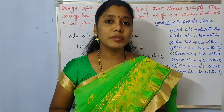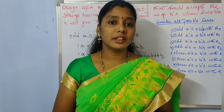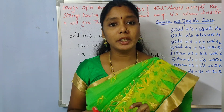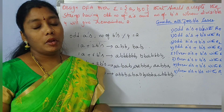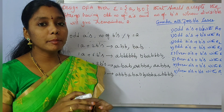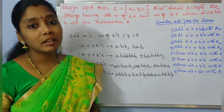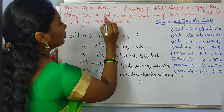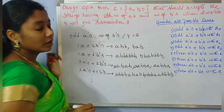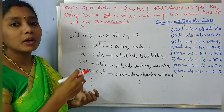Hi all, welcome back. In this video I am going to explain another difficult and interesting problem on DFA. We need to construct a DFA for input alphabet A, B and 0 that should accept strings consisting of an odd number of A's, and a number of B's that when divisible by 4 will give remainder 2.